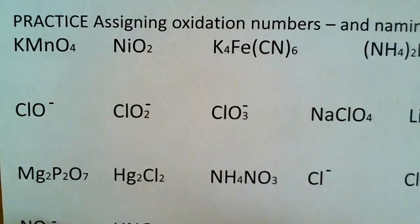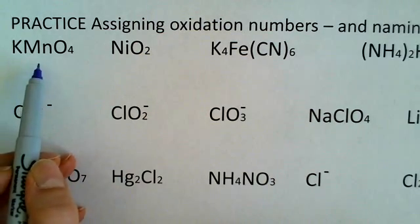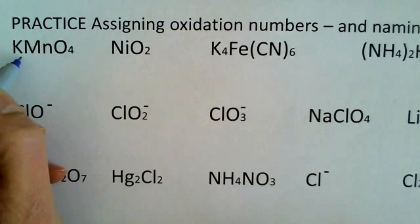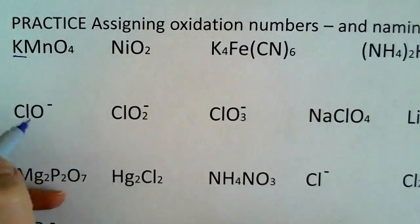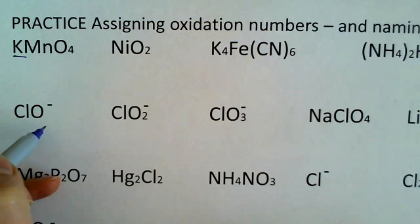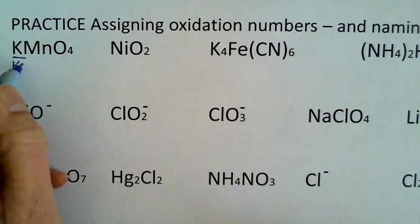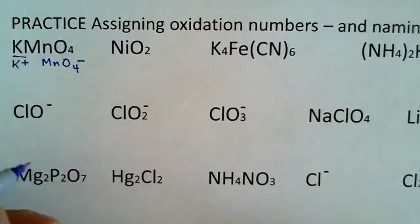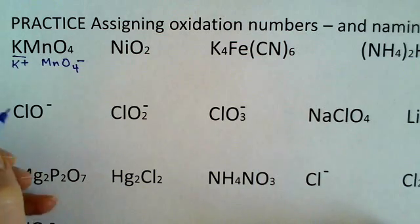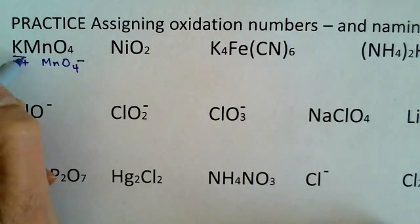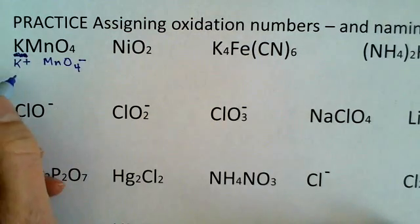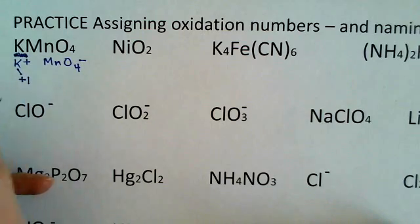I thought we could practice assigning oxidation numbers applying that lengthy list of rules so that we don't feel we have to consult it all the time. And practice naming some of these salts and polyatomic ions in the meantime. We'll start off with KMnO4. This you have to recognize is a salt. I'm underlining the K because there's my alkali metal. So this is actually a K plus ion combined with the permanganate ion.